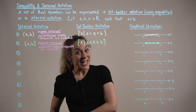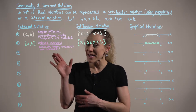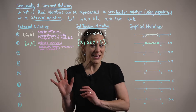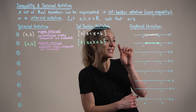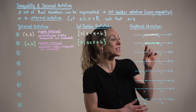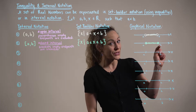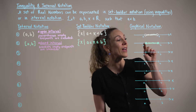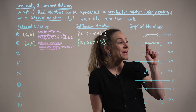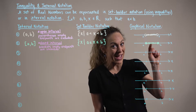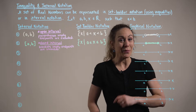In a closed interval, x can equal the endpoints, and we can better appreciate this with the corresponding graph. Notice how we have closed circles at these endpoints, implying that x can equal a, be any number in between a and b, and can equal b.